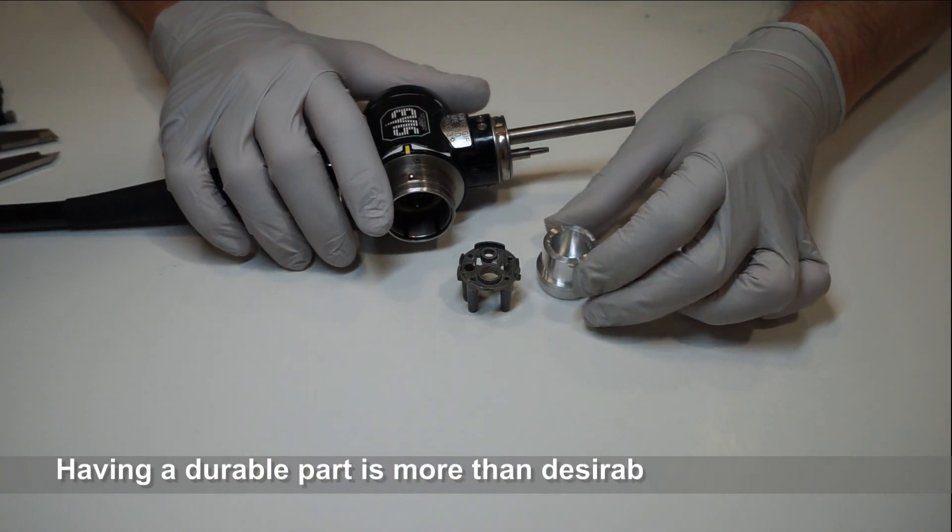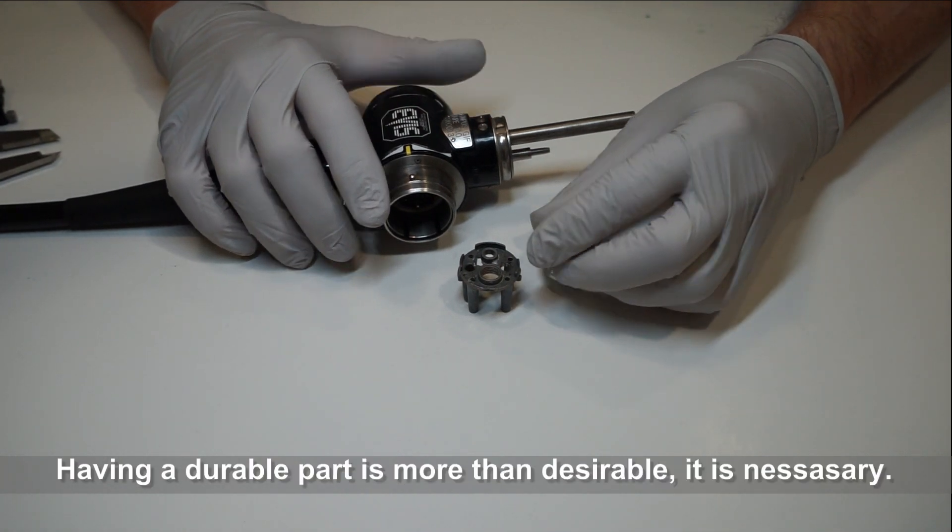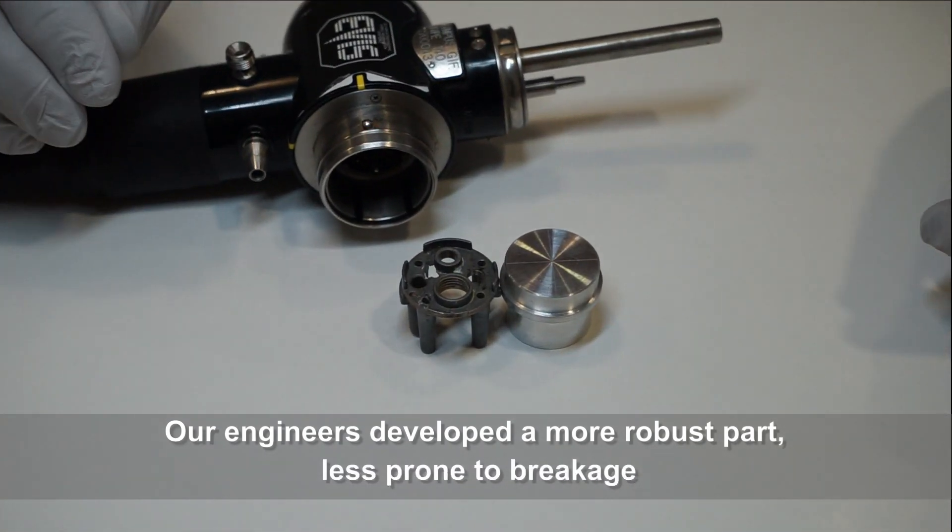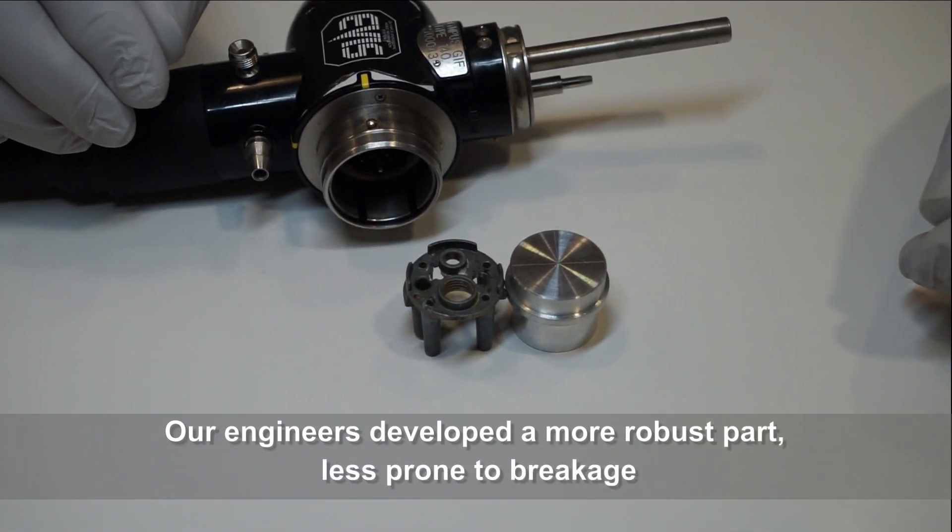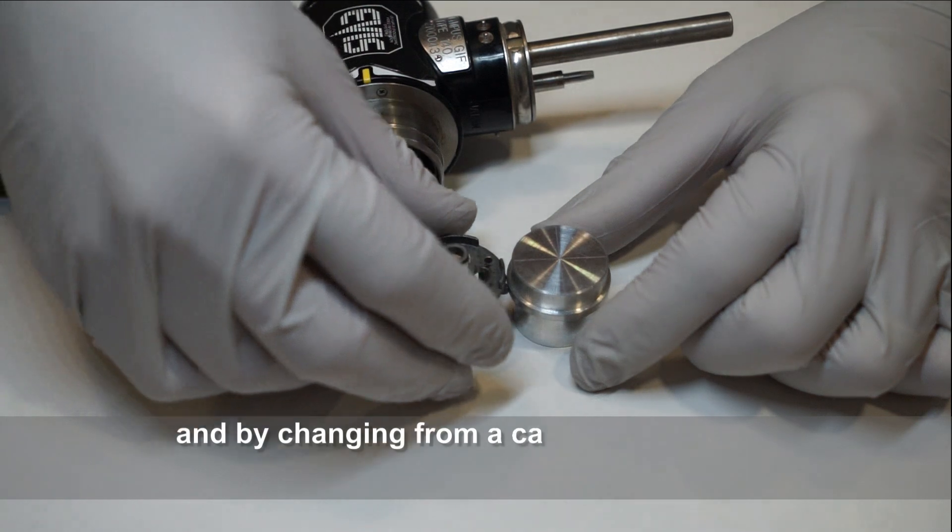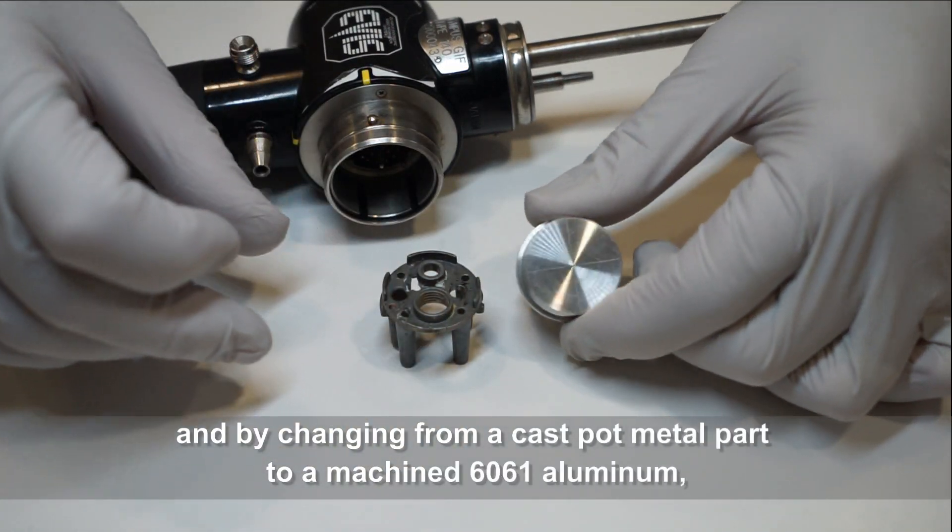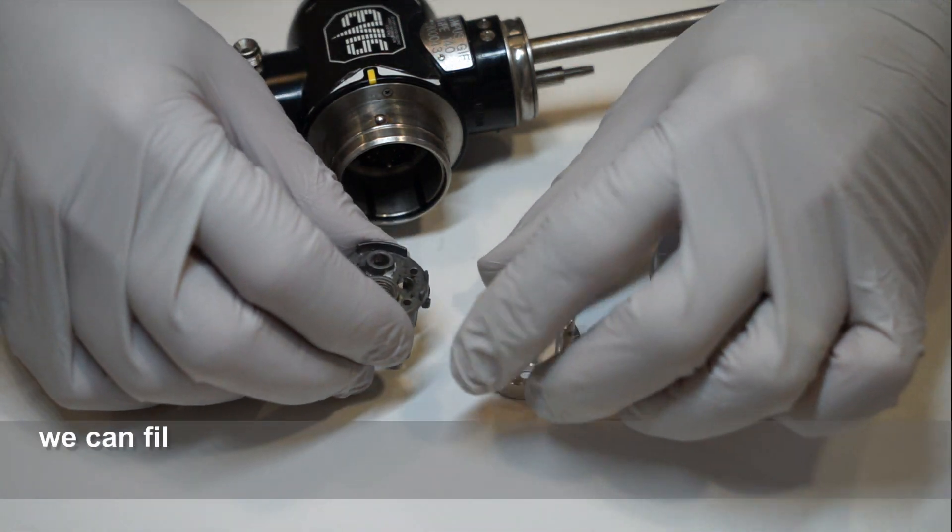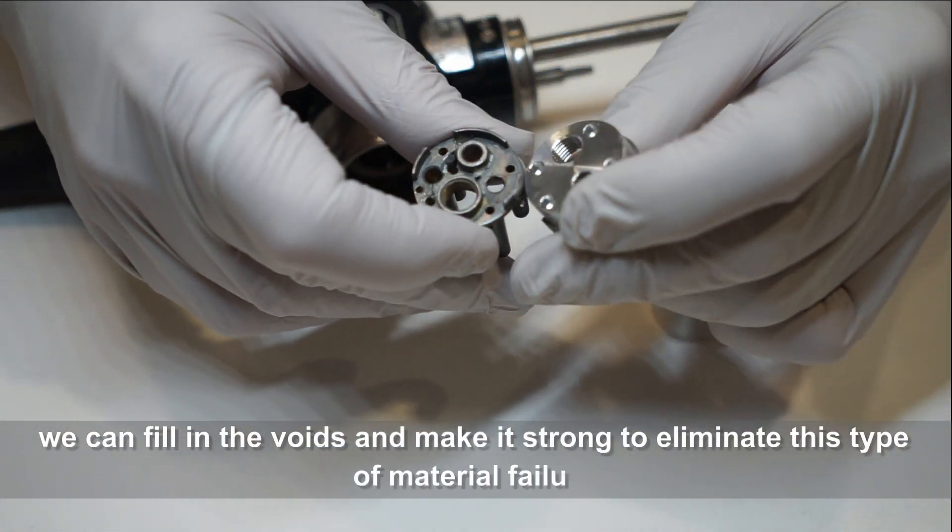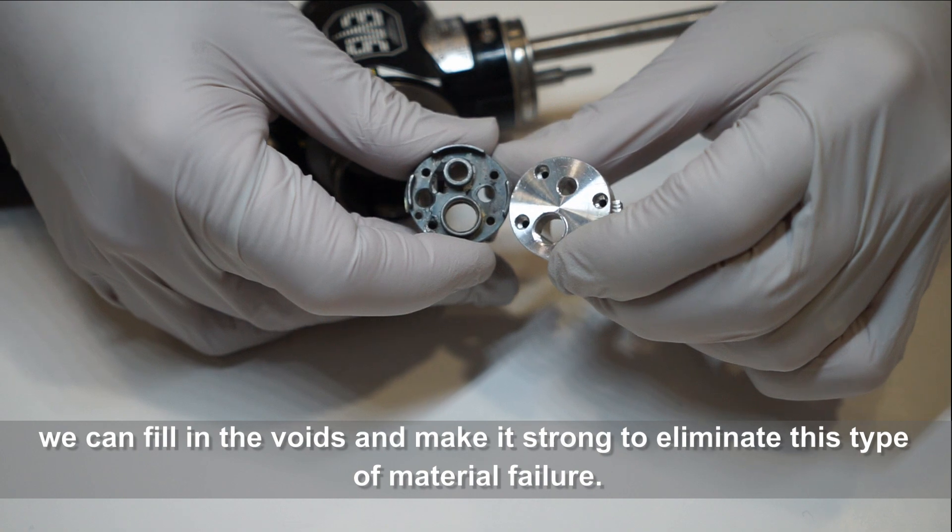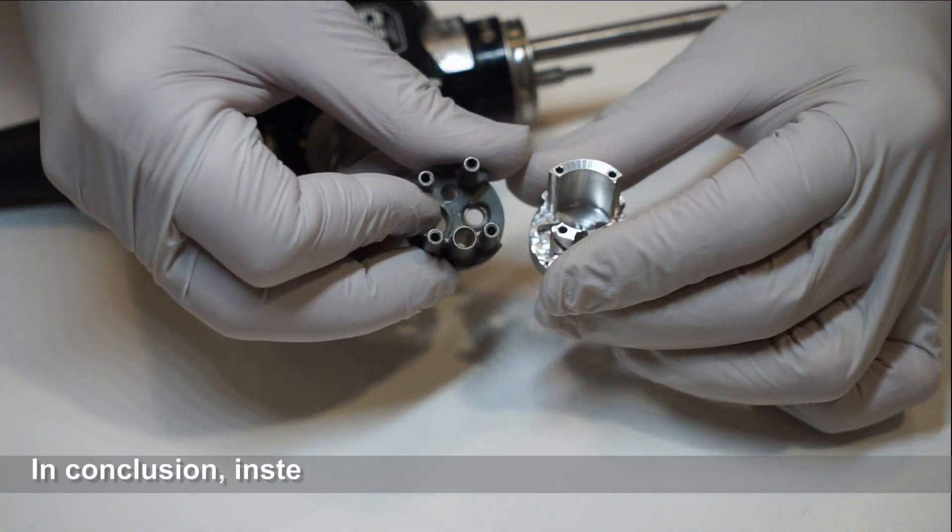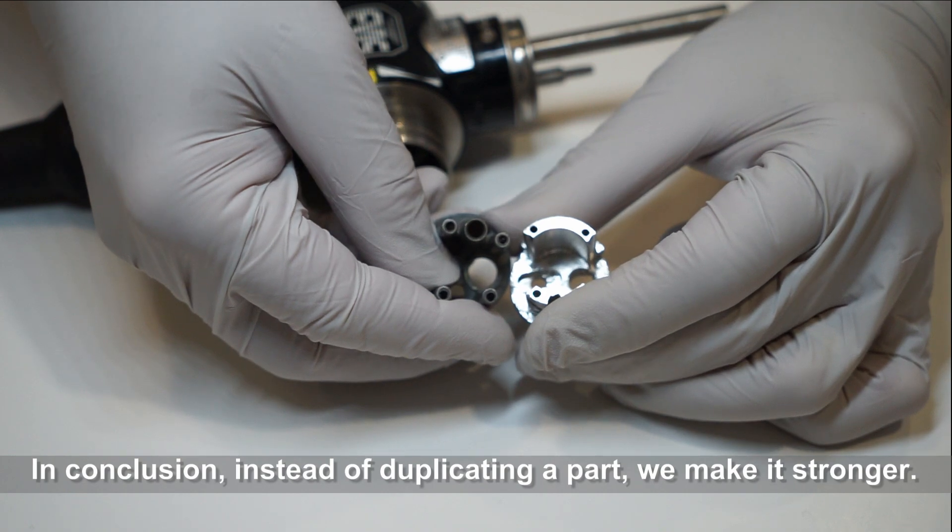Having a durable part is more than desirable. It's necessary. Our engineers developed a more robust part, less prone to breakage. And by changing from a cast pot metal part to a machined 6061 aluminum, we can fill the voids and make it strong to eliminate this type of material failure. In conclusion, instead of duplicating the part, we'll make it stronger.